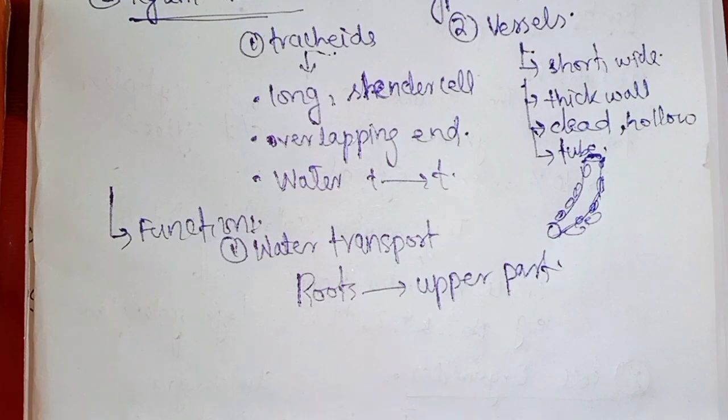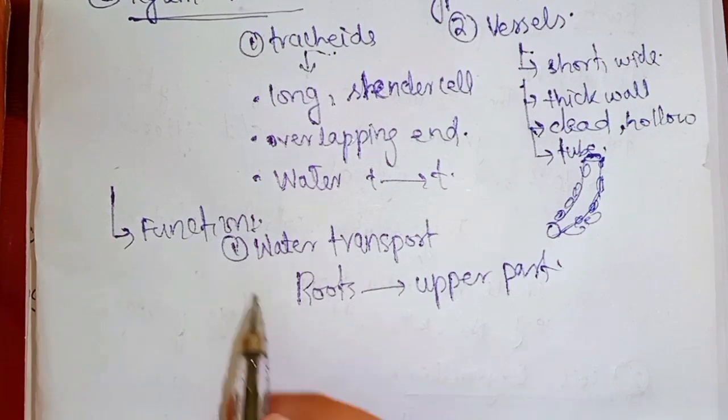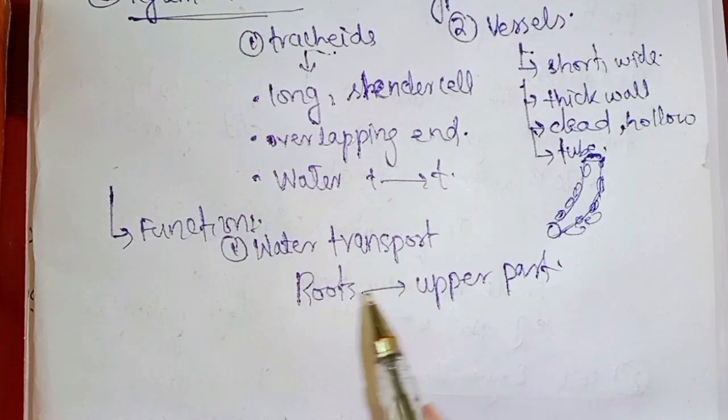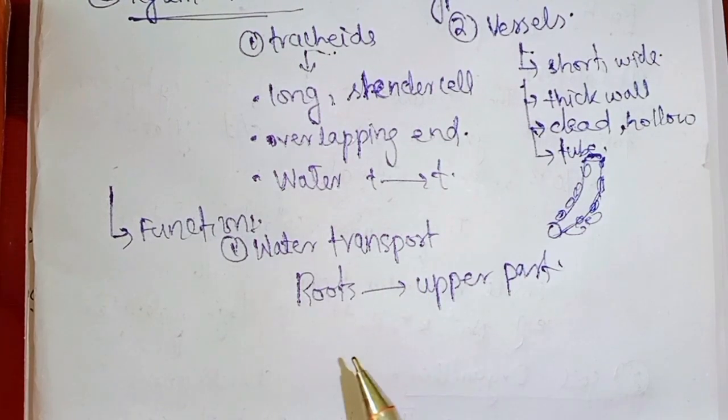Due to the presence of lignin in the secondary wall of the cell, xylem tissue also provides support to the plant. The xylem tissue transports water and therefore also supports the plant.